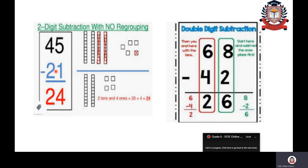Forty-five is a two-digit number and twenty-one is a two-digit number. Always start subtracting with ones place. Five is bigger than one, so I can subtract. Five ones minus one gives four ones. Moving to tens place: four tens minus two tens. I have four ones and two tens, giving twenty-four. This is two-digit subtraction without regrouping.